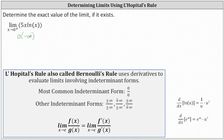We just learned about L'Hôpital's rule: if we have a limit in one of the indeterminate forms involving a quotient, then we can apply L'Hôpital's rule, which states the limit as x approaches c of f(x) divided by g(x) equals the limit as x approaches c of f′(x) divided by g′(x). Right now our function is not in the correct form to apply L'Hôpital's rule, but we can change the form so that it will be in one of the required indeterminate forms.